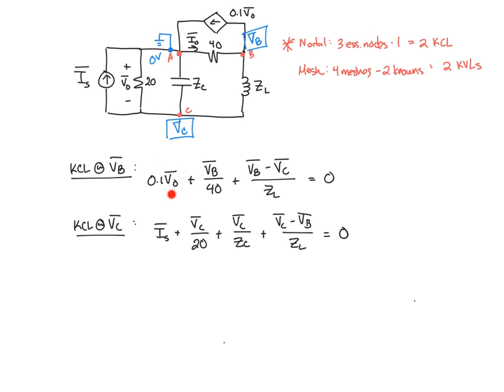V0 is unknown because it shows up in our dependent variable expression, so we need that extra expression that describes the relationship of our dependent variable V0. V0 appears across the 20 ohm resistor. We're going to try to re-express V0 in terms of our nodal voltages. So note that one end of V0 is attached to 0, the other end is attached to VC, so we can simply write V0 as equal to 0 volts minus the other end, which is VC. In other words, V0 equals negative VC.